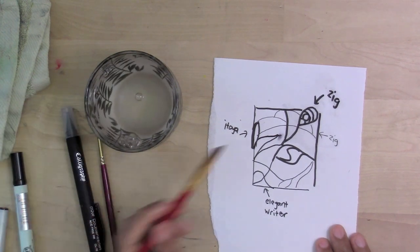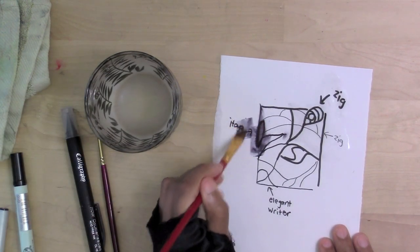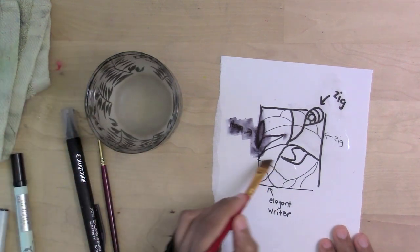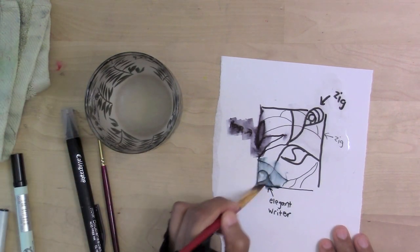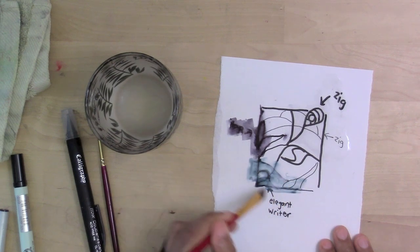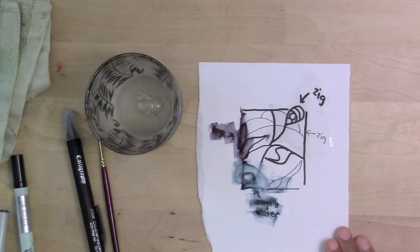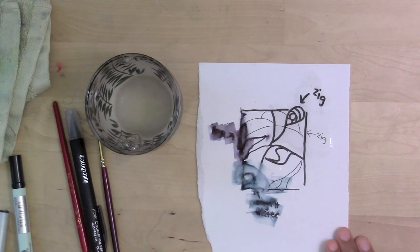The Itoya one bleeds immediately. Even though this is an archival marker, it bleeds. Now if you're going for a washi pen and ink look, this is great, but not good for these really neat stained glass lines that I want. The Elegant Rider one is making a big mess too, so I'm not going to use either of those.